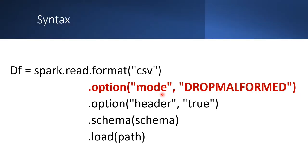Coming to syntax: while reading a CSV file — it could be anything, it could be JSON — we can handle corrupt records using the option keyword. It starts with dot option, then within that we give the keyword mode, and there are three different modes: permissive, drop malformed, or failfast. In this example syntax I have given drop malformed, but we can specify any of those three methods.